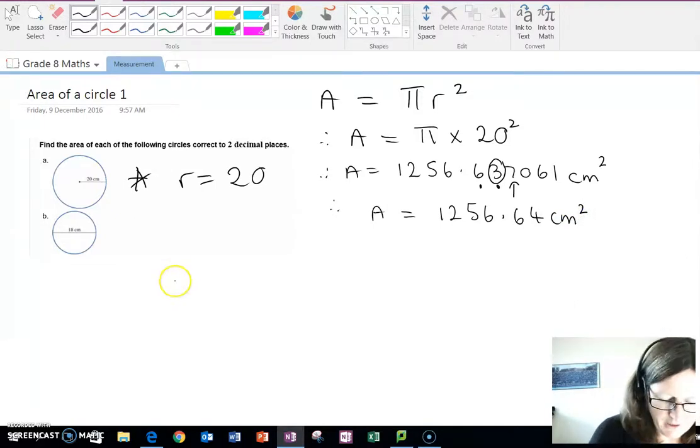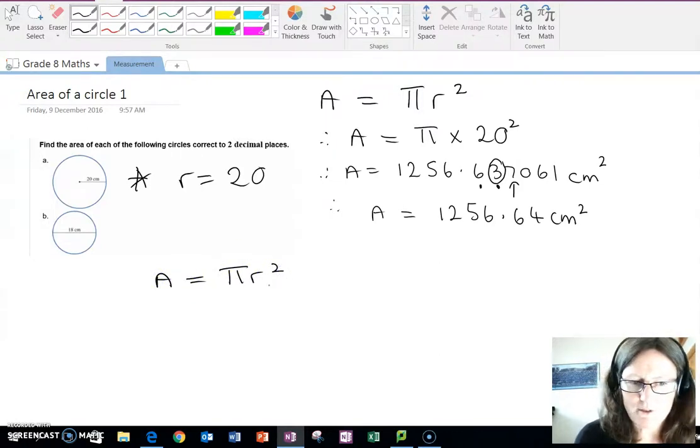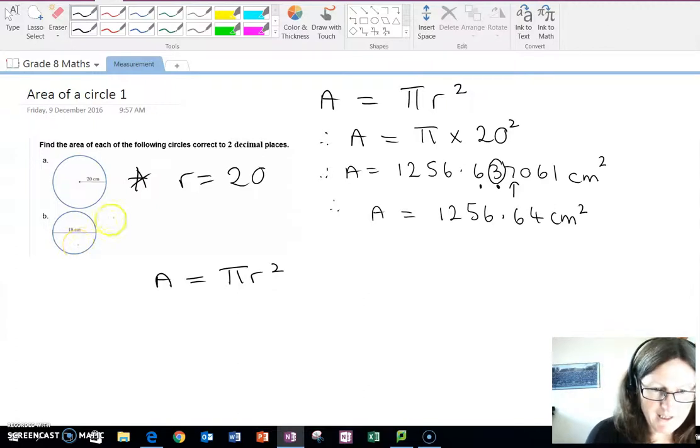With this second example, again, we write our formula down, area equals pi r squared. There is, however, one extra step involved. 18 centimeters in this example is the diameter, but for the area of a circle, we need the radius.